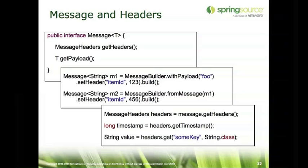But if you provide an object that can be mutated, then you have to deal with the concurrency there. At the framework level, we try to avoid that by making sure that there are no setter methods on either the message or the headers — it's all getters. The message headers define some properties that are always going to be present, like an ID and timestamp, and then a number of properties that are used by the framework itself. But you can set any key-value pair that you want within the headers.